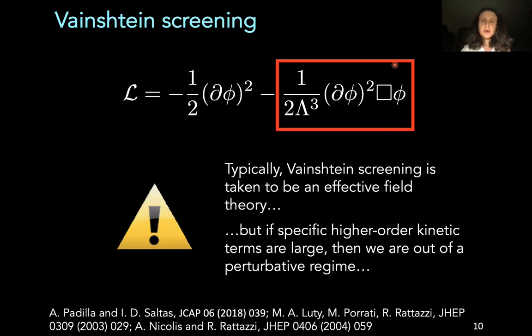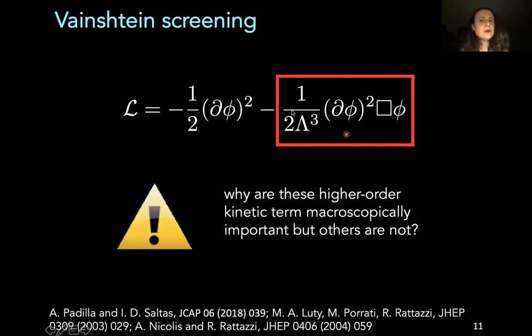However, the problem is that if you've got specific higher order kinetic terms that are large and dominant, then you're out of a perturbative regime. But at the same time, you're saying this non-standard term is dominant and macroscopic. That's a bit odd because either you're perturbative or small or you're macroscopic and dominant. And if specific higher order kinetic terms are large, then you're out of a perturbative regime. And in fact, you can start wondering how come these higher order terms are macroscopically important, but a whole plethora of other higher order kinetic terms are not. And this is an important question because if these other terms are also important, it's quite possible that they'll cancel with this one or produce something else that you don't expect.